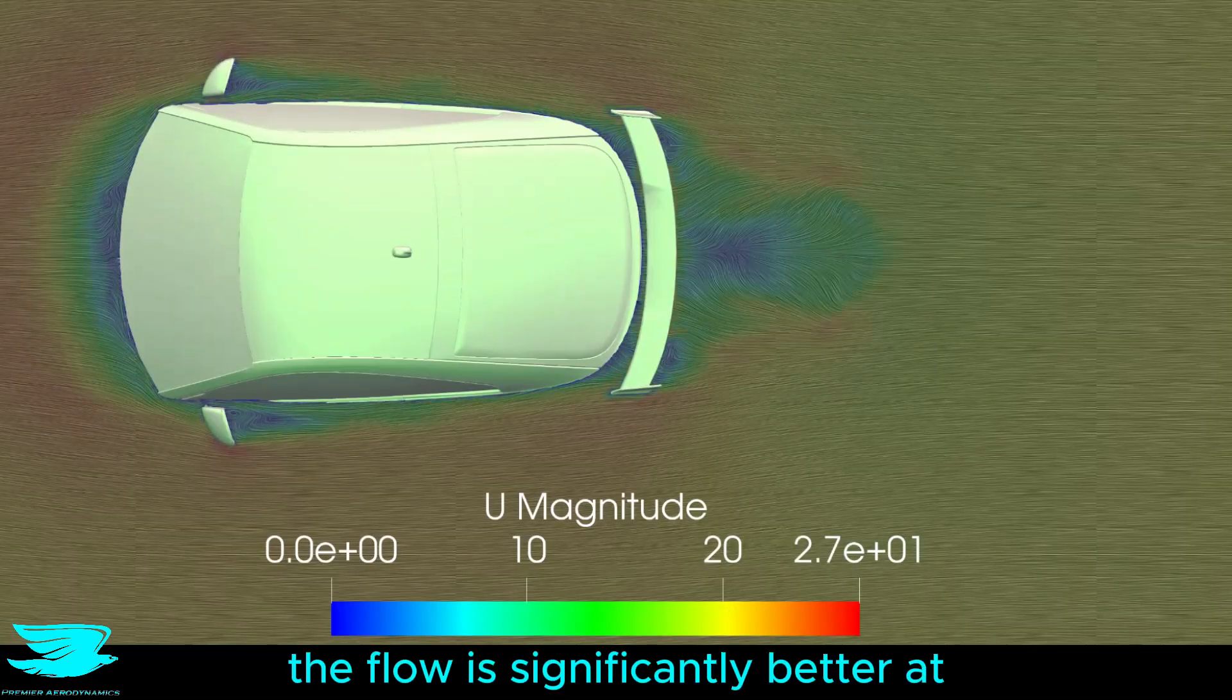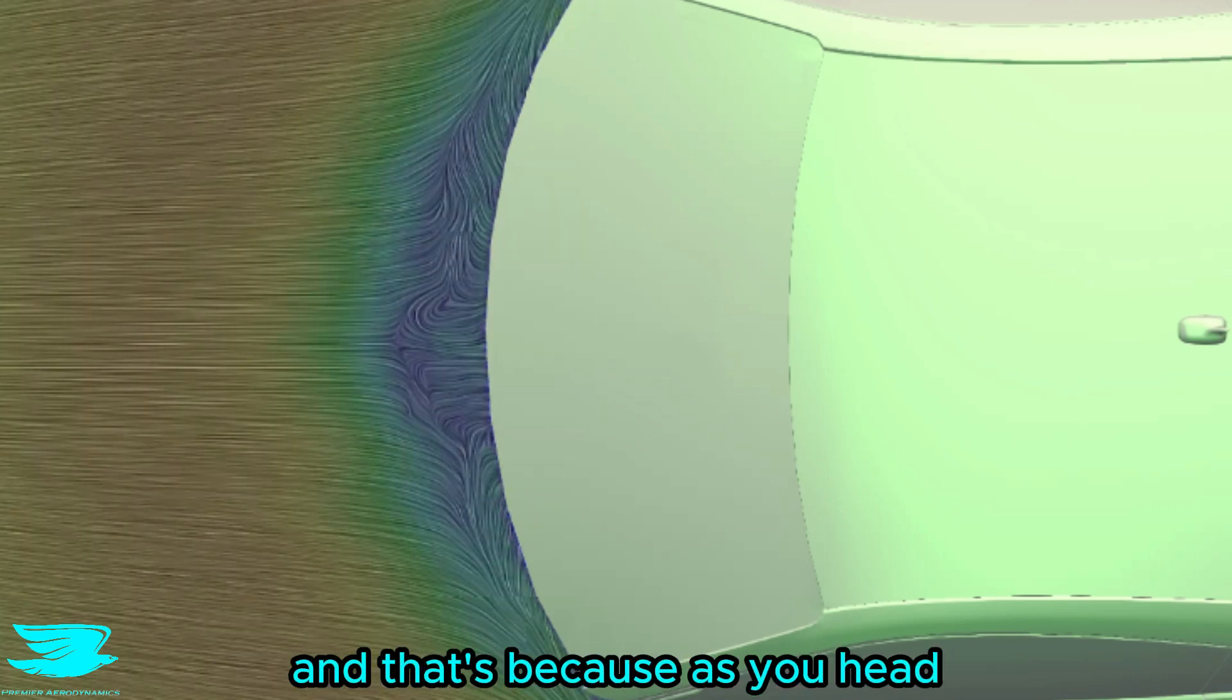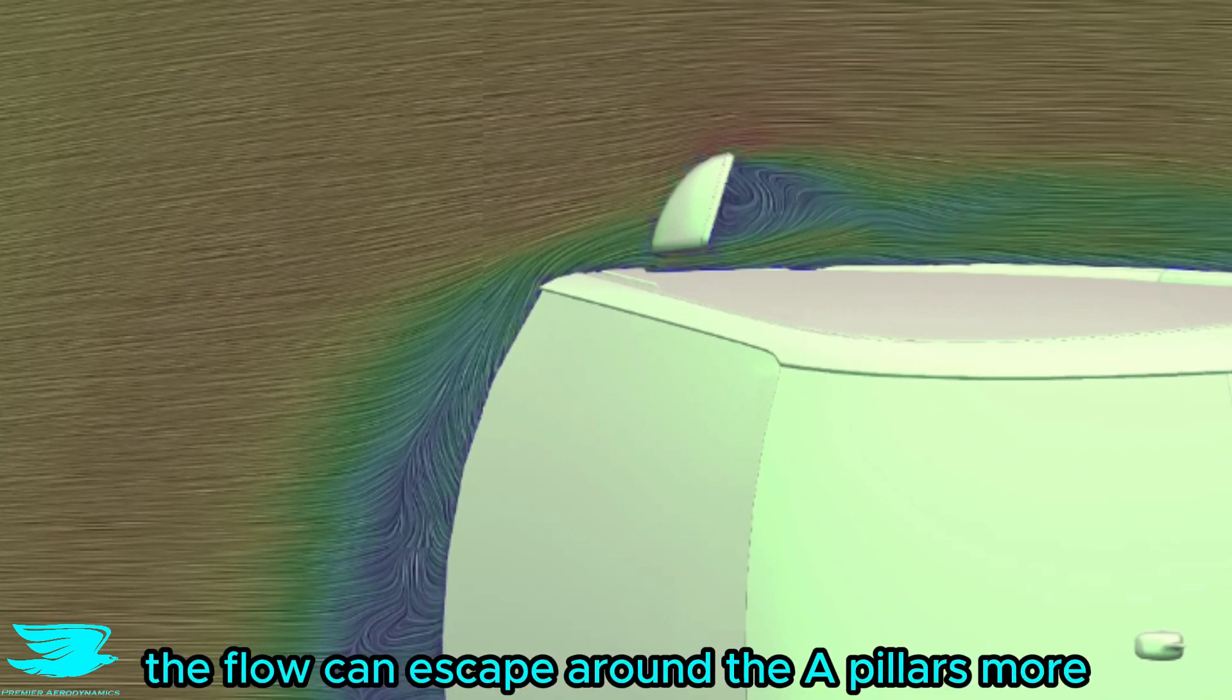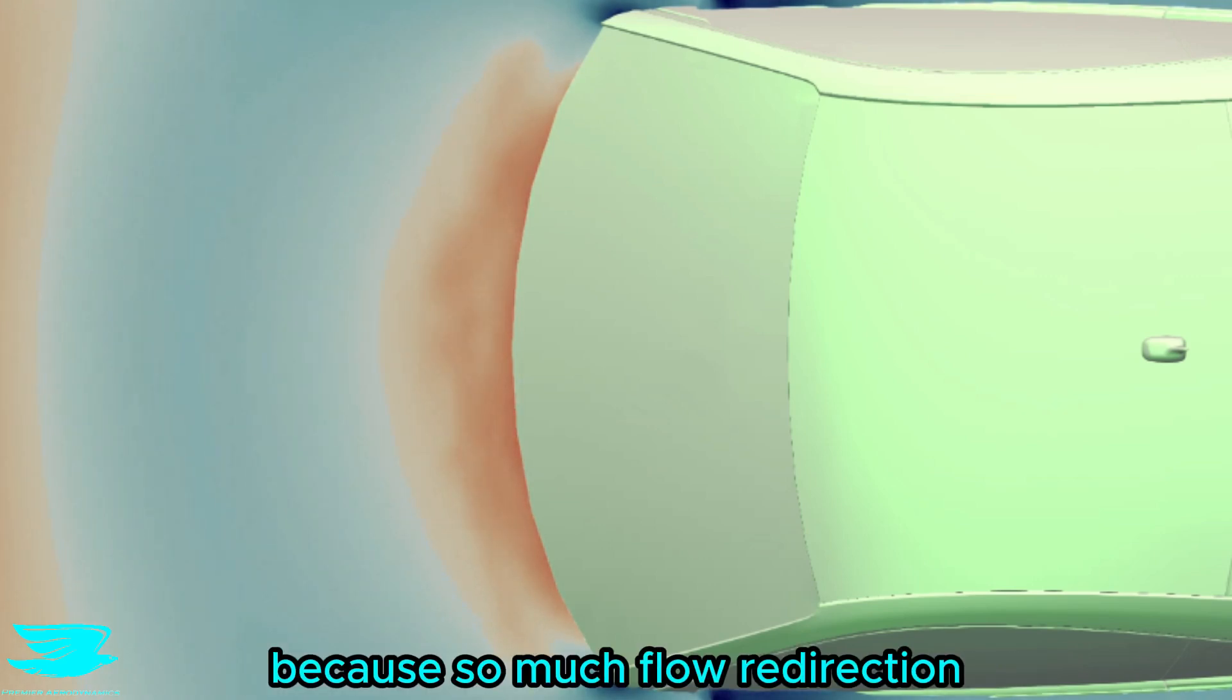From on top, the flow is significantly better. At the front windshield junction, the recirculation zone only occurs for the very middle section, and that's because as you head towards the sides, the flow can escape around the A-pillars more. However, that doesn't alleviate the pressure that much because so much flow redirection comes at a price.